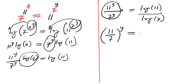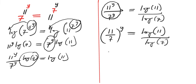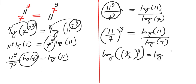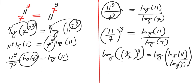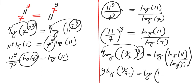The next step is to take the log of both sides again. So we have log of (11/7)^y equals to log of (log 11 divided by log 7). The exponent y can now come in front of the log on the left side, giving us y times log(11/7) equals to log of (log 11 divided by log 7).